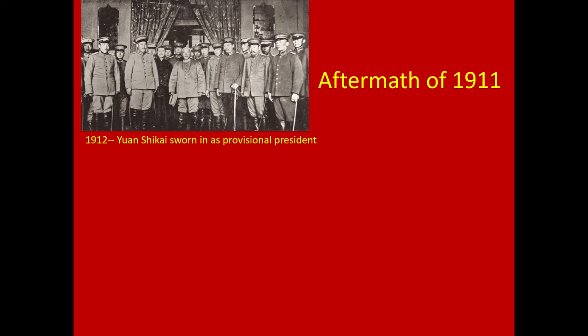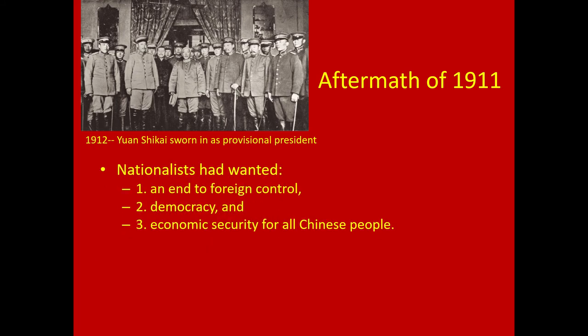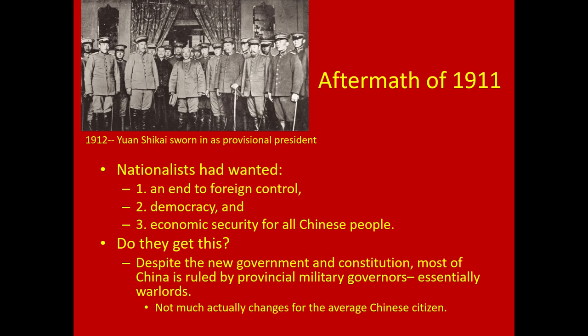The nationalist rebels had wanted an end to foreign control, democracy, and economic security for all Chinese people. Did they get this? They got a new government and constitution, but most of China is actually ruled by provincial military governors — essentially warlords. Not a lot really changes for the average Chinese citizen; these governors are not really taking care of the Chinese people.